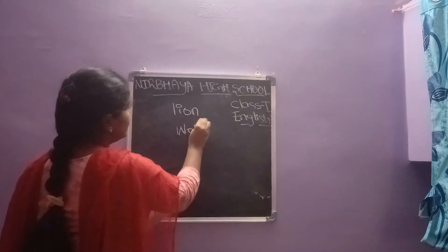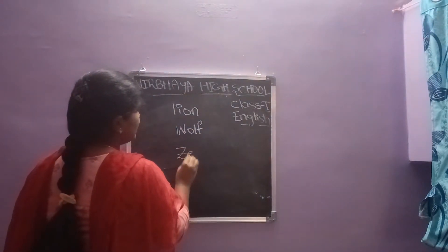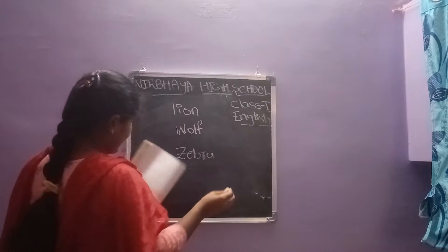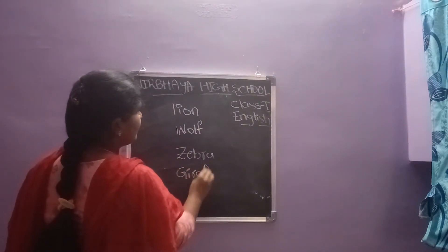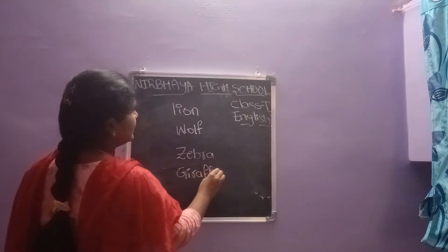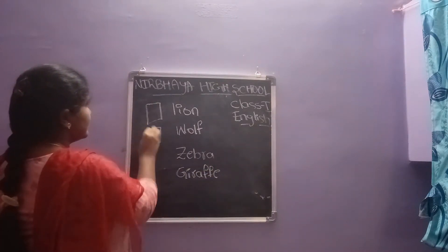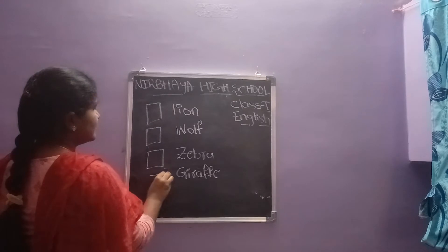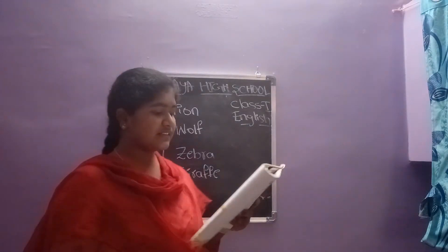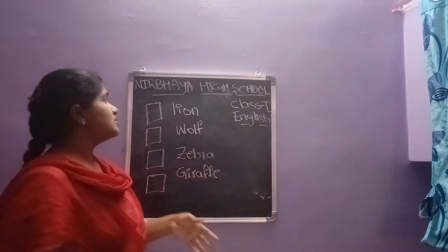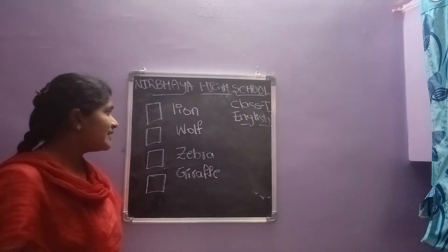Next one: wolf — W-O-L-F. And next one: zebra — Z-E-B-R-A. Now we have to enter the numbers, 1, 2, 3 and so on, keeping them in alphabetical order.